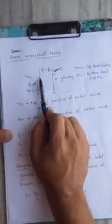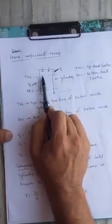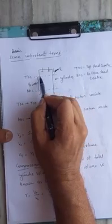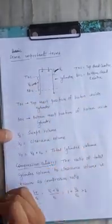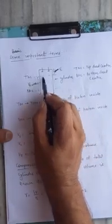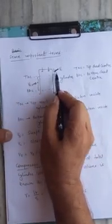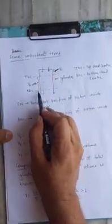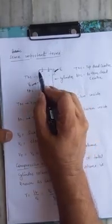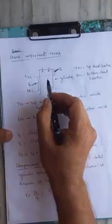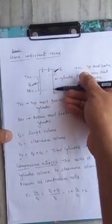There are three important volumes: swept volume, clearance volume, and total cylinder volume. When the piston is at the Top Dead Center, the volume occupied by the working substance is known as the clearance volume, denoted by Vc. When the piston is at the Bottom Dead Center, the volume occupied by the working substance is referred to as total cylinder volume, denoted by Vt. The difference between the two — the volume between TDC and BDC — is known as the swept volume.